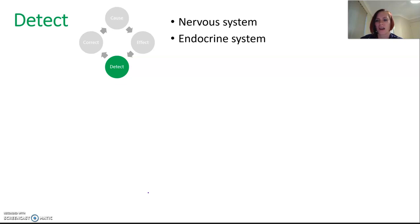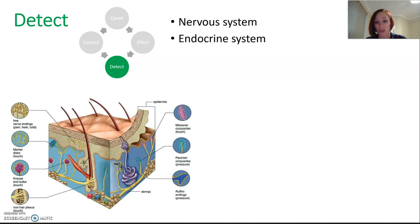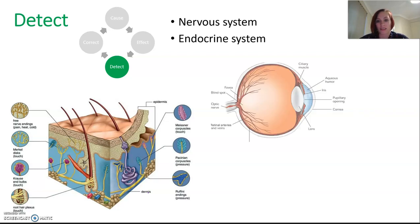So nervous stimuli, the nervous system might look at external receptors. So like on your skin, you can feel pain, you can feel heat, all those things. Your eye, obviously, so your five kinds of senses are external stimuli, stimulated by the external stimuli.